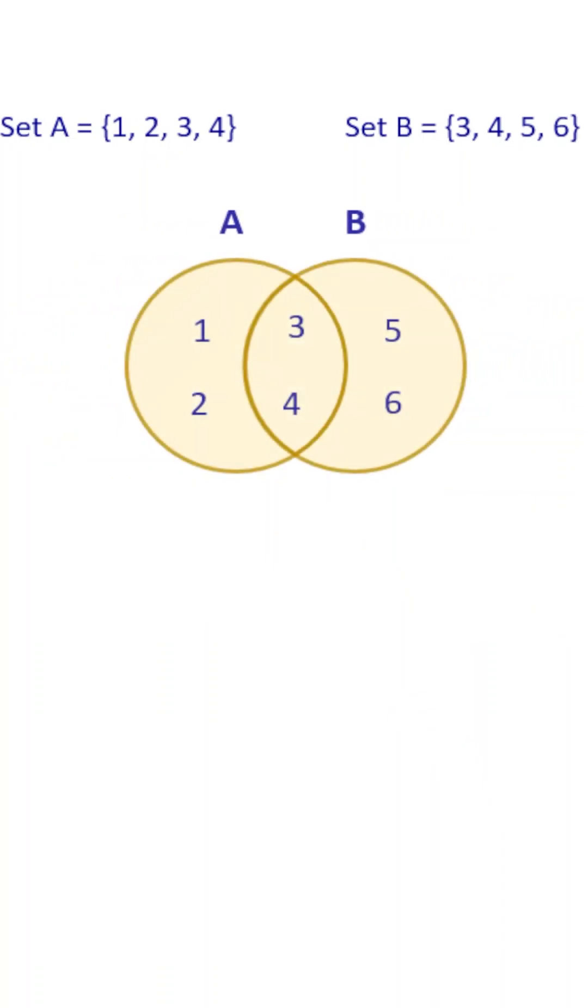When the circles overlap, this region shows the common elements 3 and 4. These elements belong to both sets. This overlapping region is called the intersection of A and B.